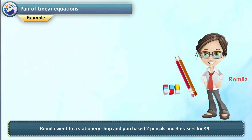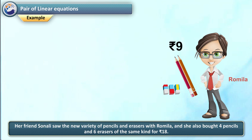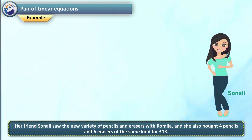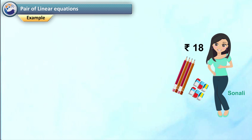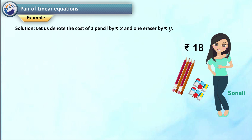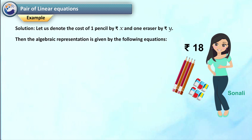For example, Romila went to a stationary shop and purchased two pencils and three erasers for rupees 9. Her friend Sonali saw the new variety of pencils and erasers with Romila, and she also bought four pencils and six erasers of the same kind for rupees 18. Represent this situation algebraically and graphically. Let us denote the cost of one pencil by rupees x and one eraser by rupees y. Then the algebraic representation is given by: 2x plus 3y is equal to 9 — equation 1, and 4x plus 6y is equal to 18 — equation 2.